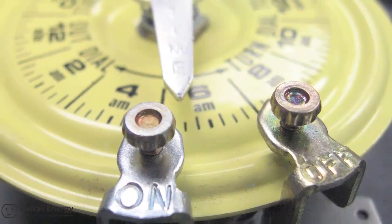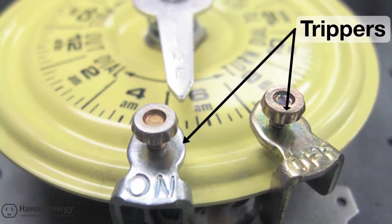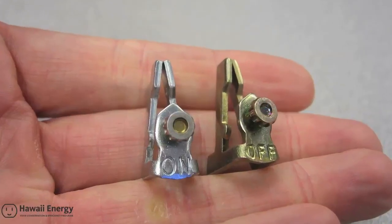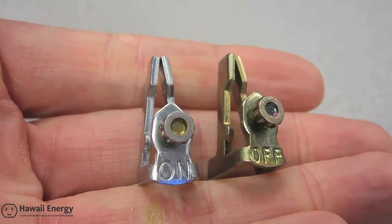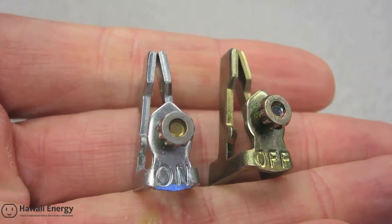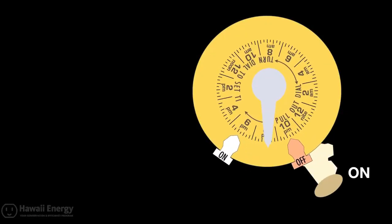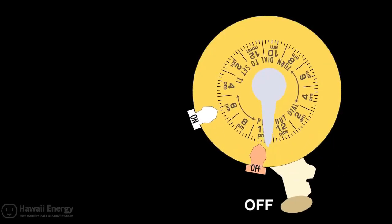To turn the electric supply to the heating element on and off automatically with the timer, factory supplied trippers must be fastened to the yellow dial at the appropriate times. Here is a pair of factory provided trippers. The silver one marked on permits the heating element to be energized while the other marked off prevents electric backup. Once they are fastened to the dial, they physically flip the manual lever on or off as the tripper sweeps past the lever mechanism located under the silver time pointer.